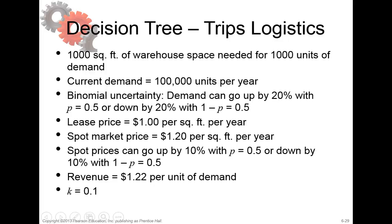The lease price is $1, but that's not important in this option. The spot market price is $1.20 per square foot per year, which is the price we are going to use for our calculations right now. The spot prices can go up by 10% with p = 0.5 or down by 10% with 1 - p = 0.5. The revenue is $1.22 per unit of demand. The discount rate k = 0.1.